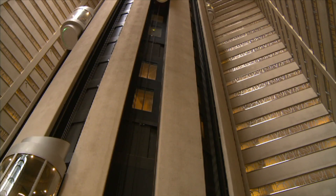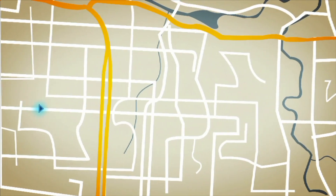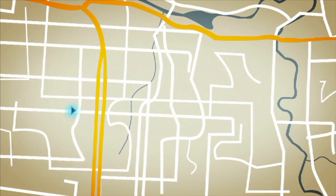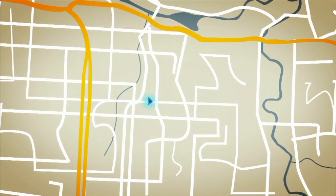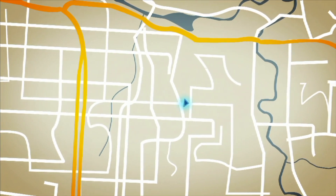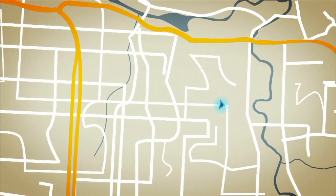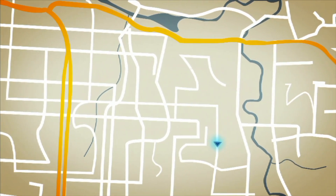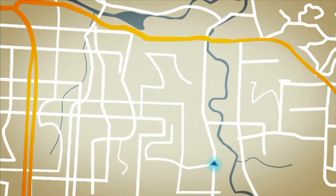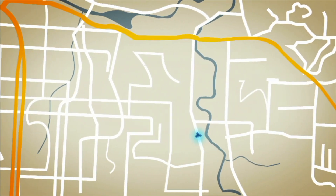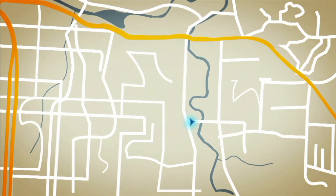Position can tell us many things about an object. A global positioning system can tell us where an object is, where it was, which direction it is moving, and how close it is to other objects. Position can even tell us how fast an object is moving.